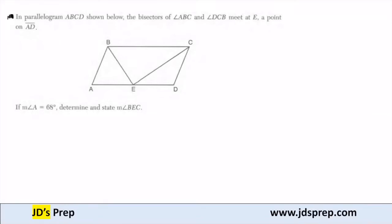Hello, welcome to JD's Prep. For this question, parallelogram ABCD is shown below. The bisectors of ABC and DCB meet at E, a point on AD.